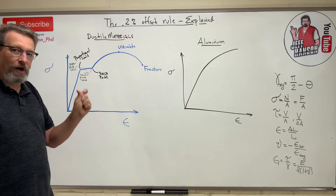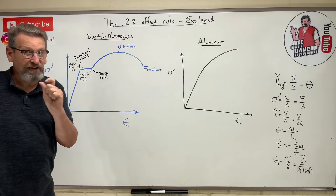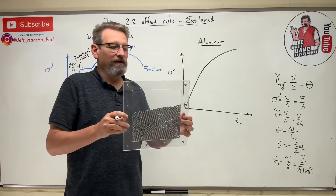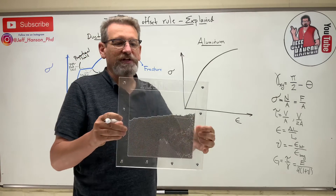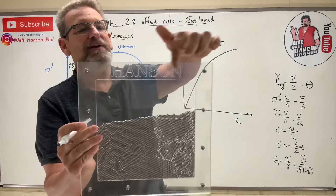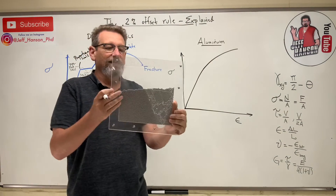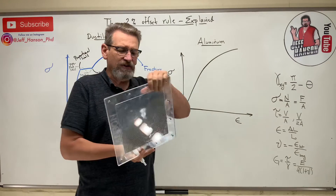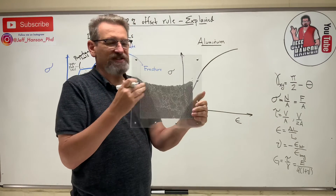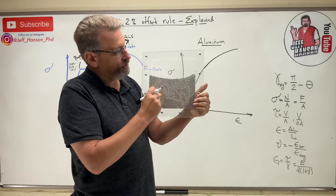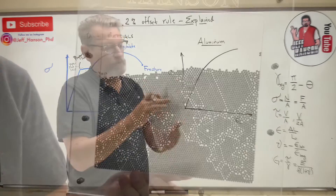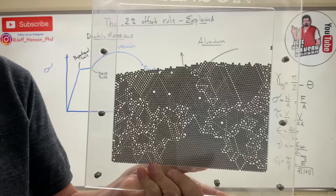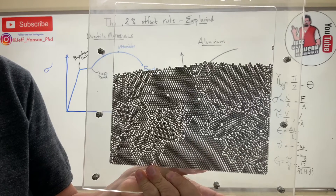What happens there occurs really fast. I want to show you something — this is a little toy I had made in the machine shop. It even has my name on it — no expense spared. There are 10,000 little BBs in there, and when I rearrange them you can start to see grain boundaries.